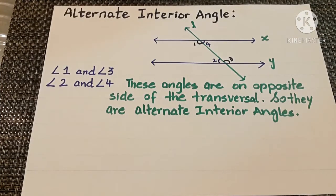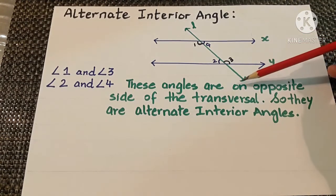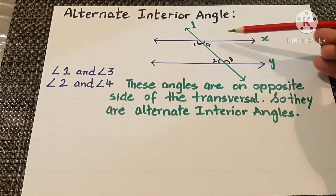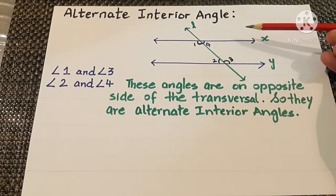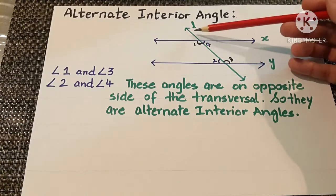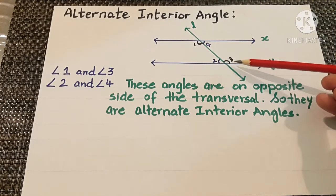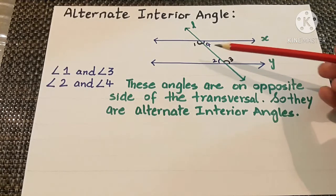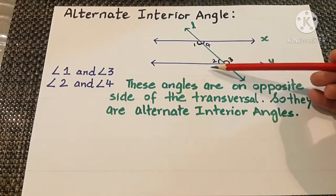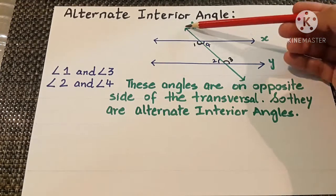Alternate interior angles: Line X and line Y are two parallel lines intersected by transversal L. The interior angles on parallel line X are angle 1 and angle 4, and on line Y the interior angles are angle 2 and angle 3. Now, what are alternate interior angles? Angle 1 and angle 3, and angle 2 and angle 4 are the alternate interior angles of these two parallel lines intersected by the transversal.